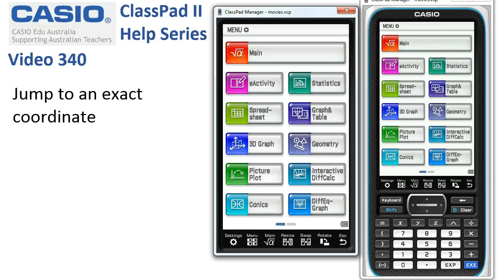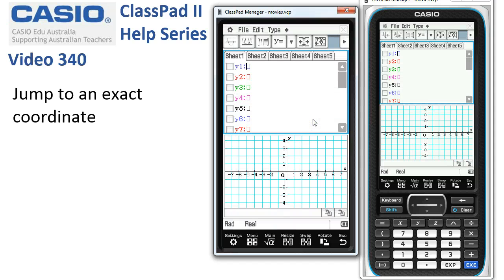Jumping to an exact coordinate when we're graphing a function. We'll pop into graph and table, or we could do this for main—it really doesn't matter.